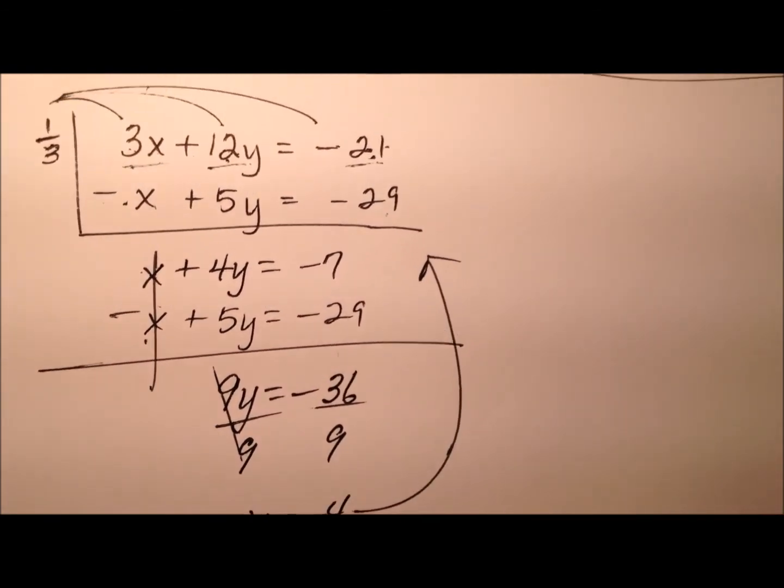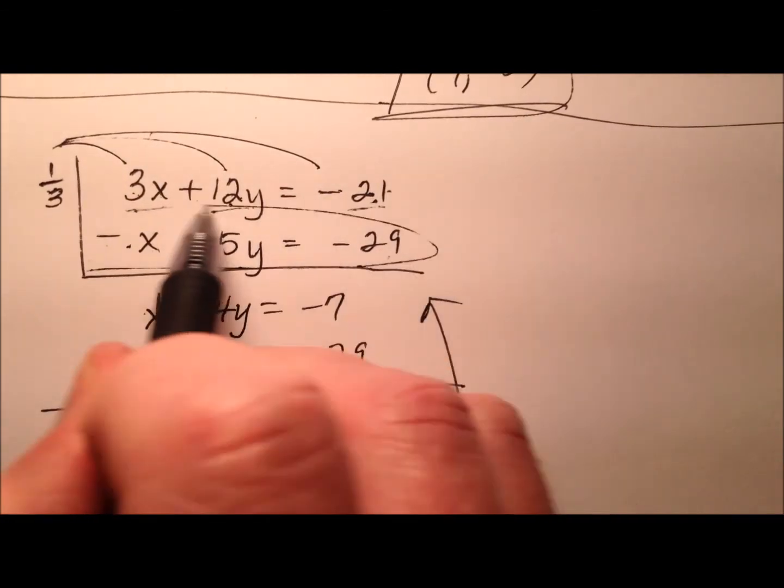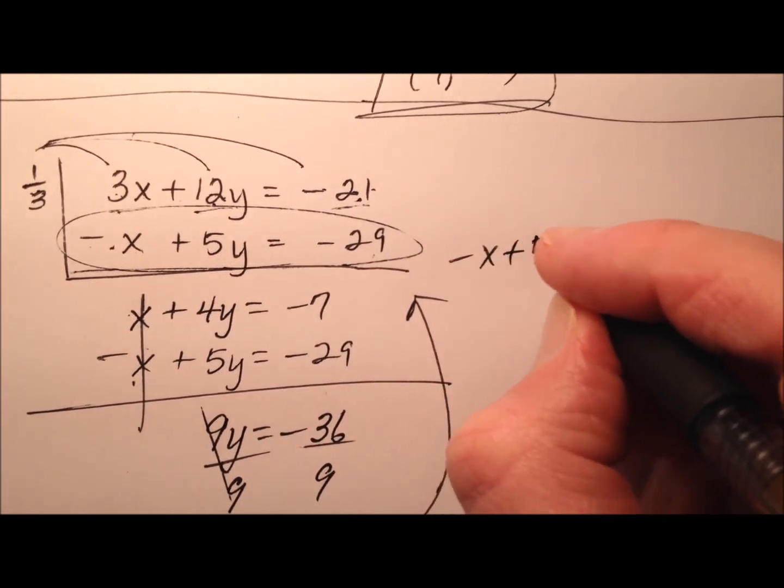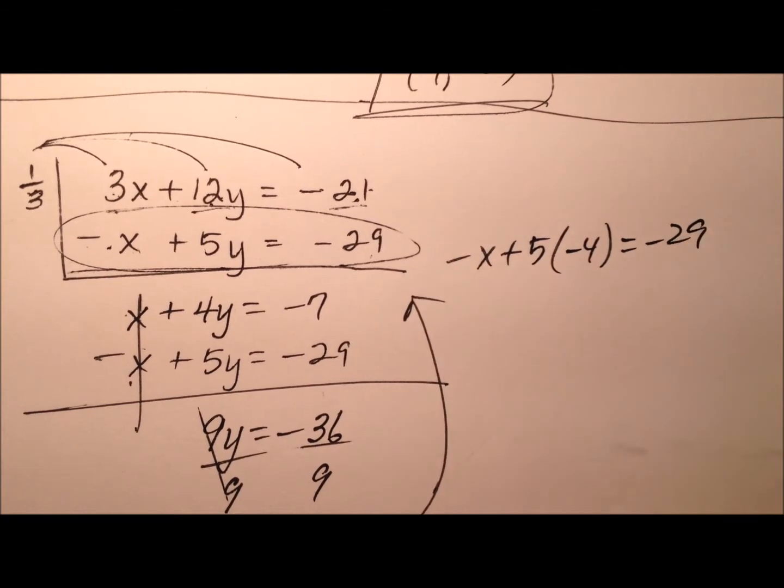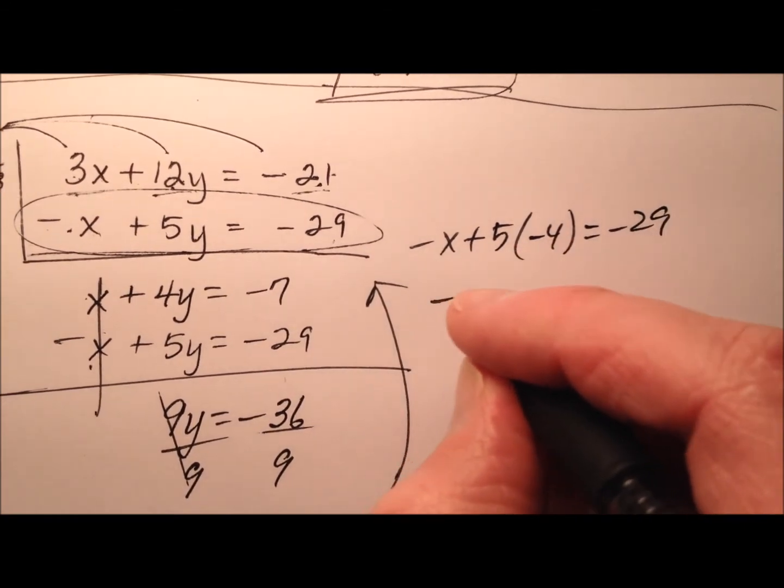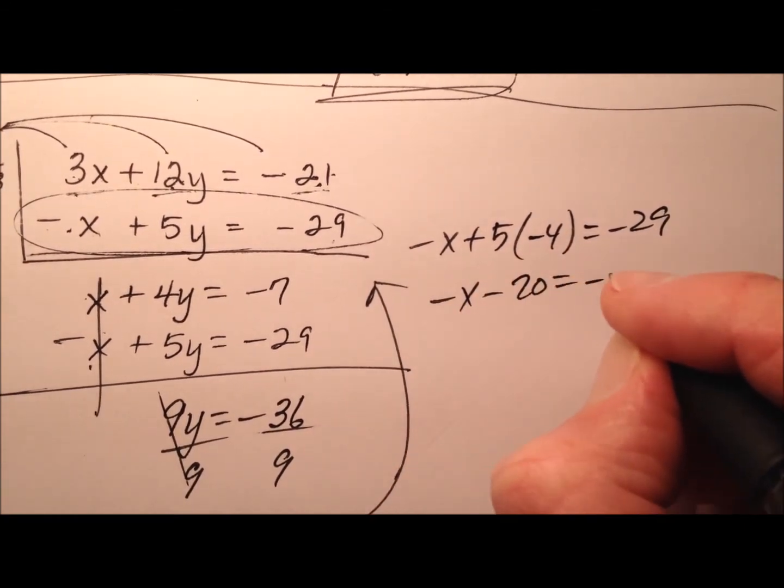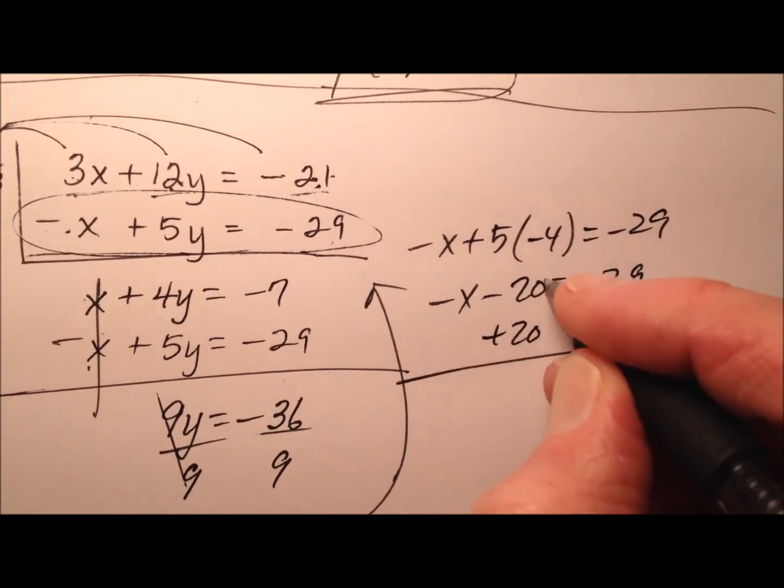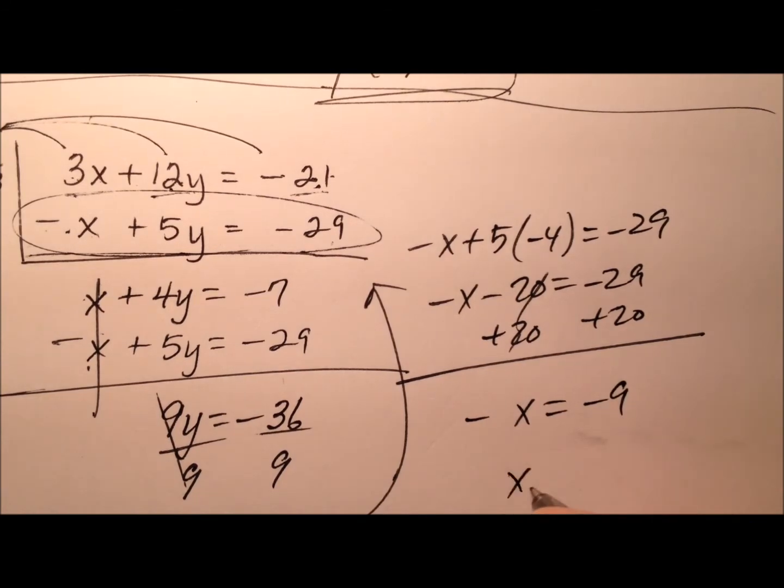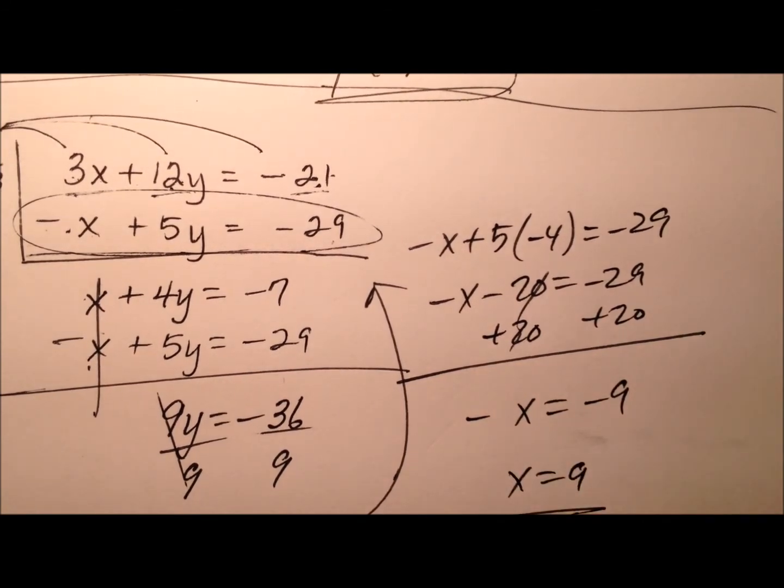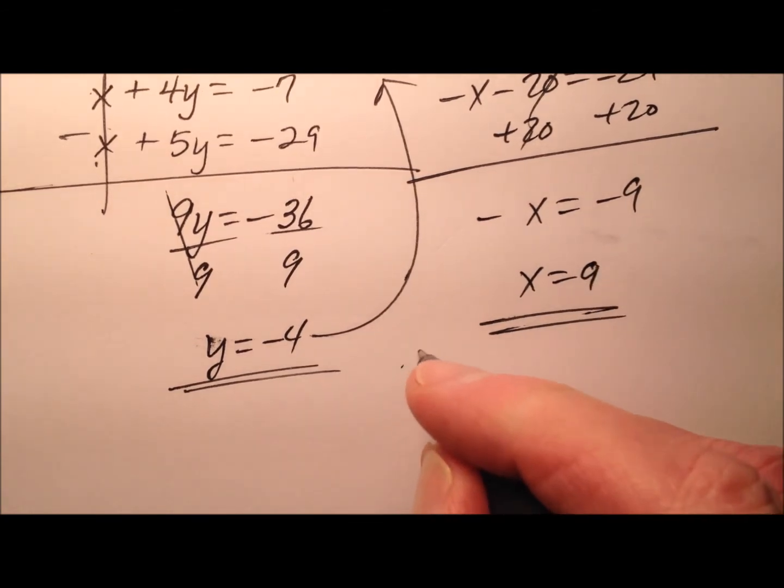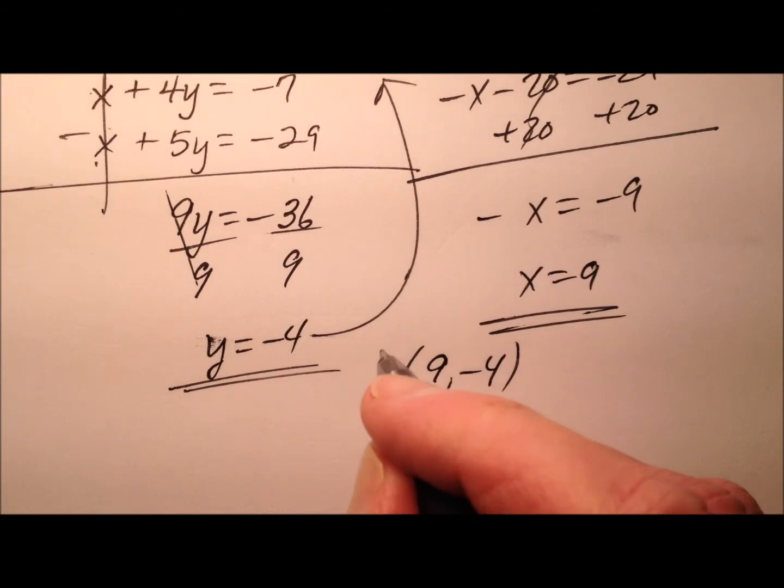So we can plug it back in. Let's plug it back into the second equation. So negative x plus 5 times y and y was negative 4 equals negative 29. Negative x minus 20. Let's add 20 to both sides. So negative x equals negative 9, which means positive x will equal positive 9. So our ordered pair will be written as 9, negative 4.